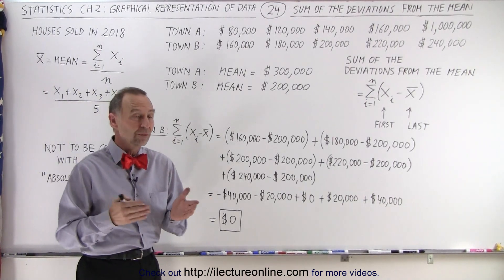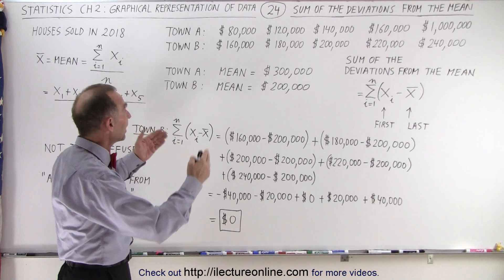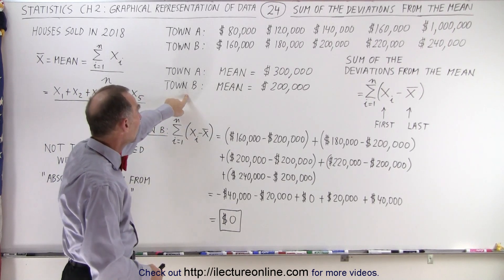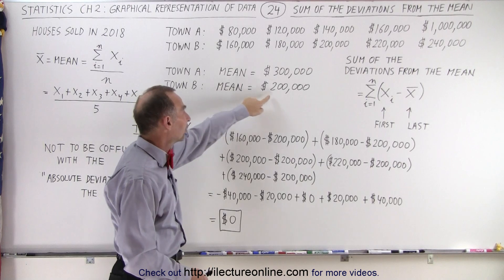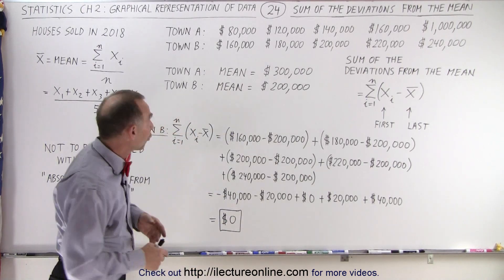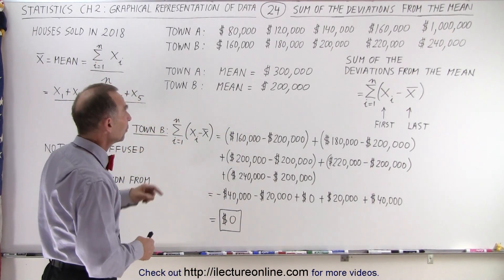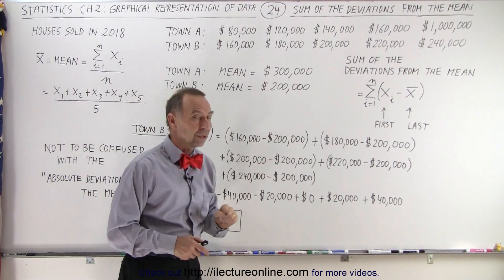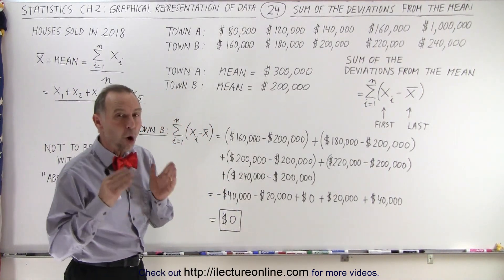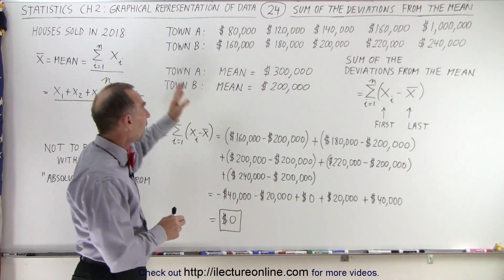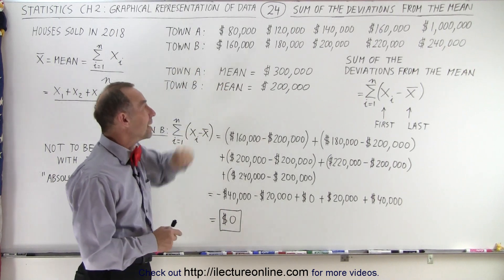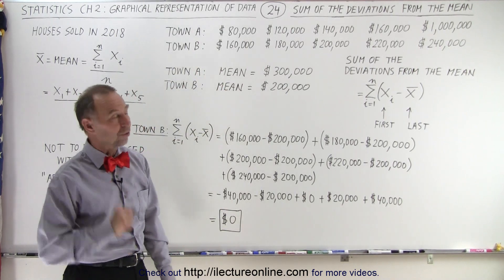So what we're going to do is we're going to take the mean of a set of data. We're going to take a look at Town B in this case where we calculated that the mean of all the house prices of the houses sold in 2018 was $200,000. So now we're going to sum up all the deviations, all the house prices from the mean. When we do that we get an interesting result.